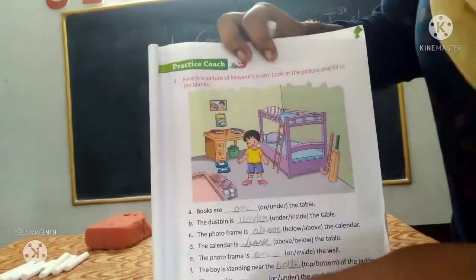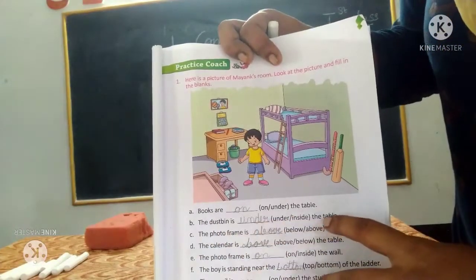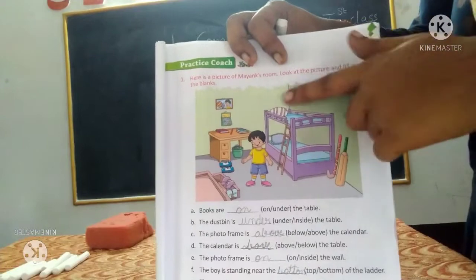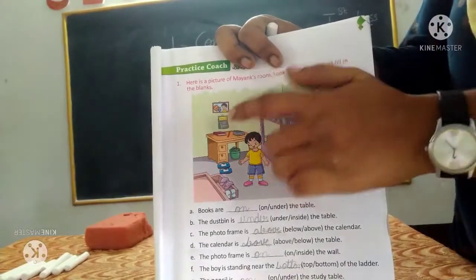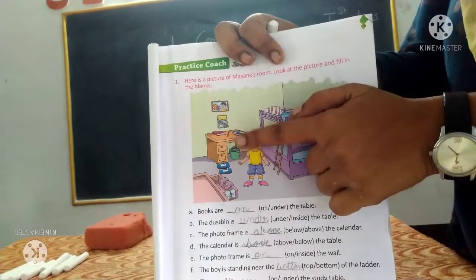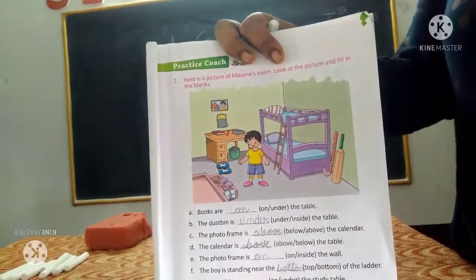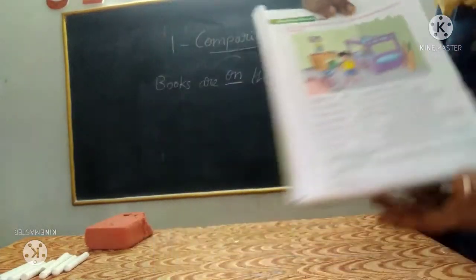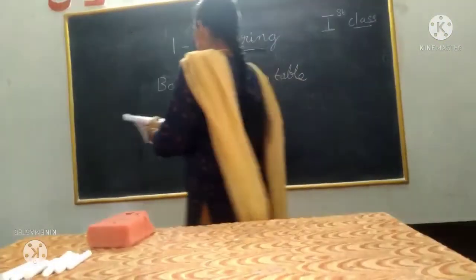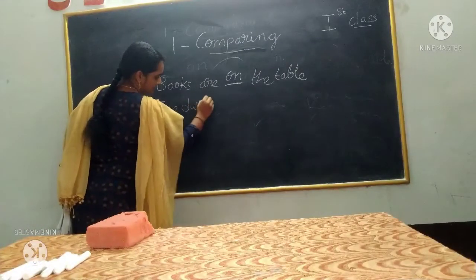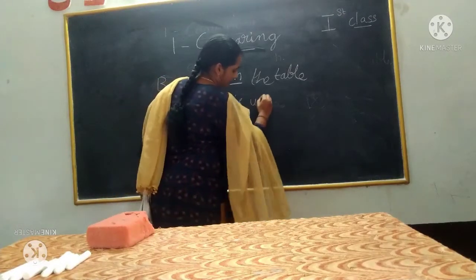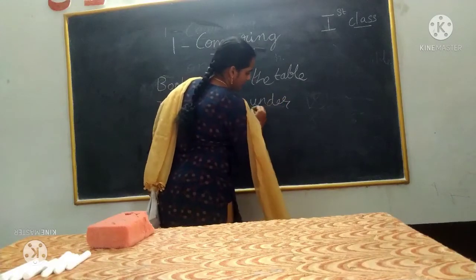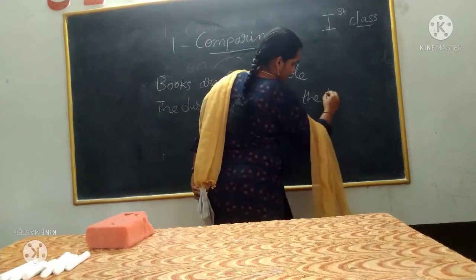Next question: the dustbin is — dash — the table. Where is the dustbin in this picture? The dustbin is under the table — it is down below, so the answer is under. The dustbin is under the table.